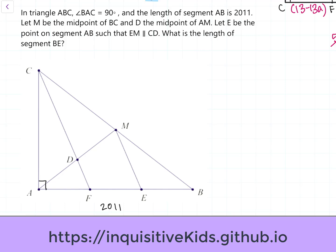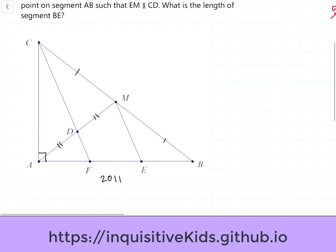Let's go back and re-read the problem. BAC is 90 degrees, and the length of segment AB is 2011. M is the midpoint of BC. So, if BC was here, then this would be X, and this would be D is the midpoint of AM. Now, as you can see, we know some ratios now. E is the point on segment AB such that EM is parallel to CD. So, EM and CD are parallel. What is the length of segment BE? We're trying to find this length over here.